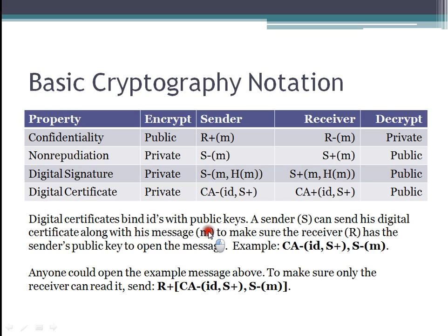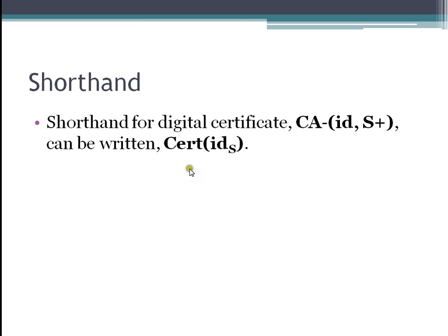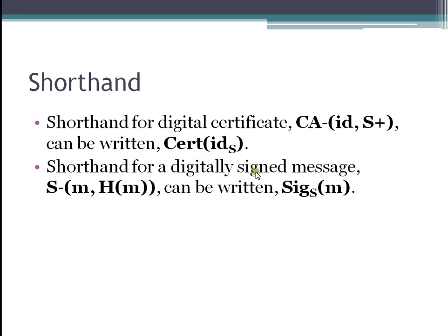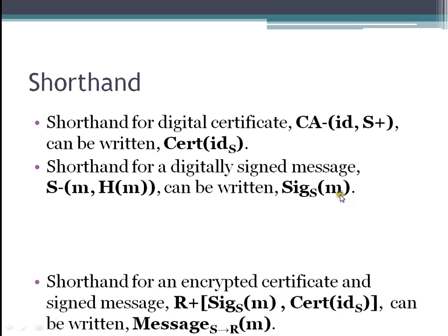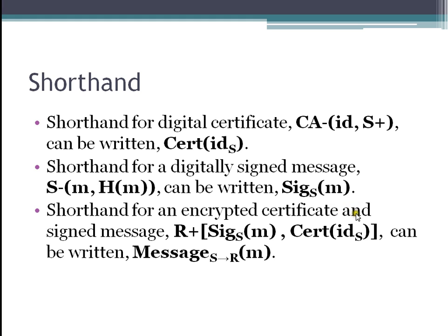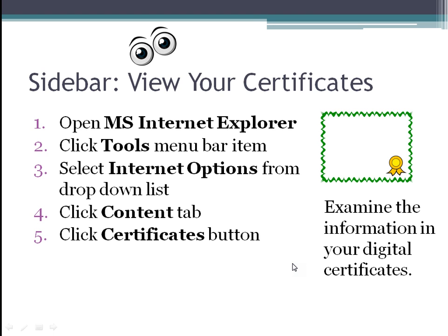That's enough cryptography notation. For shorthand, we will use cert(ID) for the digital certificate. For signed messages, we'll just say sig(S, M) — that means it was signed. And for an encrypted certificate and signed message, we'll just call that message(S to R, M). Incidentally, if you want, you can go check right now to see your own digital certificates. Go to Internet Explorer, click on Tools, select Internet Options, go to the Content tab, click on the Certificates button and you can examine your digital certificates.